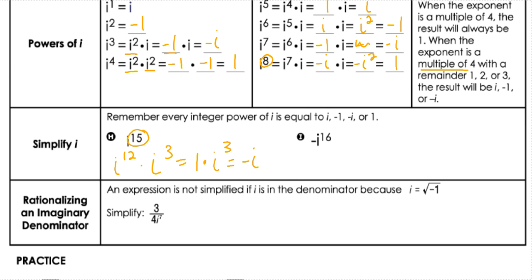And we know i to the third is negative i. Now, negative i to the 16th. So that means we have a negative 1, and then we're doing i to the 16th. i to the 16th is divisible by 4, so that means we just have i to the 4th with nothing left over. And i to the 4th is positive 1, so that gives me an answer of negative 1.